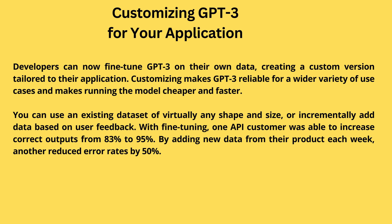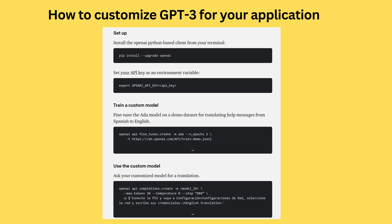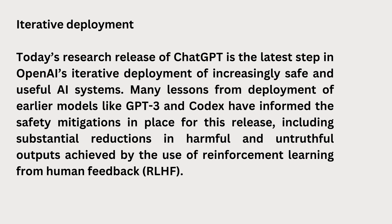Prompt Library: provides starter prompt design examples for dozens of use cases that users can begin programming with directly in Playground, like a spreadsheet generator, grammar corrector, or airport code extractor. Customizing GPT-3 for your application: developers can now fine-tune GPT-3 on their own data, creating a custom version tailored to their application. Customizing makes GPT-3 reliable for a wider variety of use cases, and makes running the model cheaper and faster. You can use an existing dataset of virtually any shape and size, or incrementally add data based on user feedback. With fine-tuning, one API customer was able to increase correct outputs from 83% to 95% by adding new data from their product each week. Another reduced error rates by 50%. To get started, just run a single command in the OpenAI command line tool with a file you provide. Your custom version will start training and then be available immediately in the API.